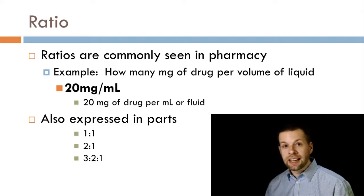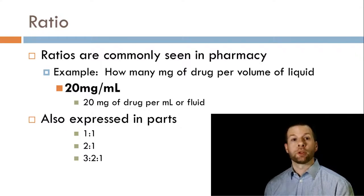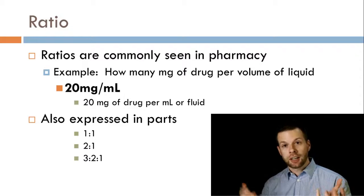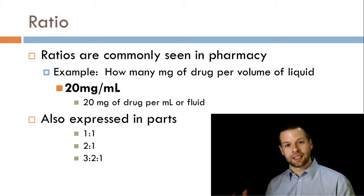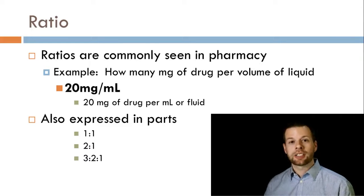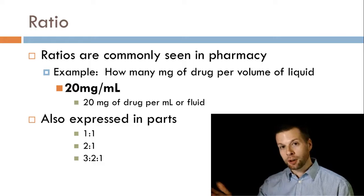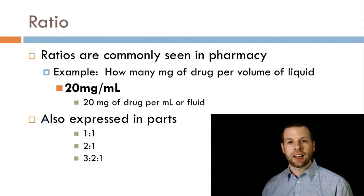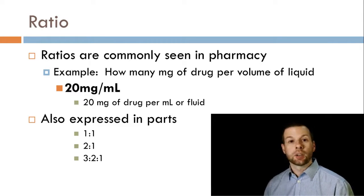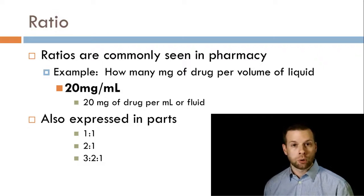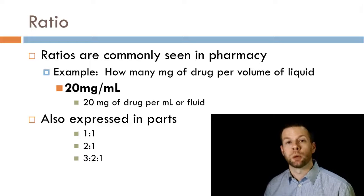Ratios can also be expressed in parts. A one-to-one solution has equal parts. Two-to-one will have twice as much of the product in the solution. Three-to-two-to-one means six total parts — three parts, two parts, one part — with the first portion being three times as much as the last. You'll see this in parts like one-to-one, two-to-one, but more commonly as milligrams per milliliter.